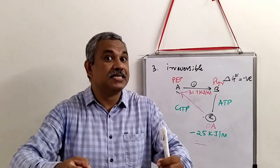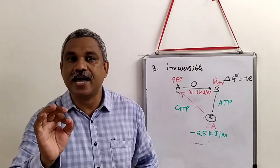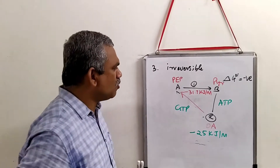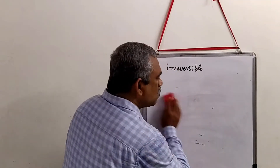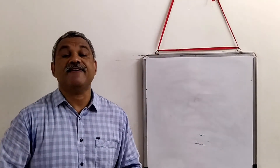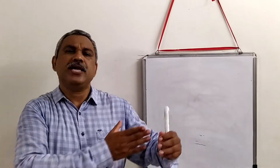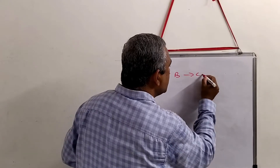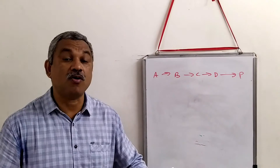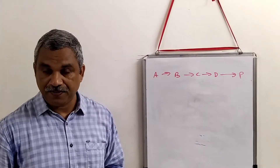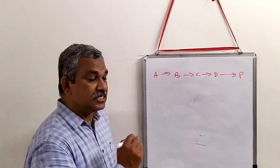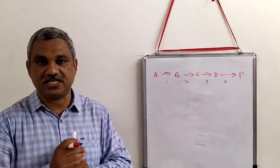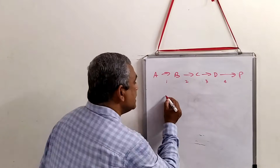The cell ensures a pathway cannot be reversed by making one step have a huge negative delta G value. Since delta G values are additive, if a metabolic pathway goes A → B → C → D → P, one of these steps is made irreversible. This is known as the committing step.